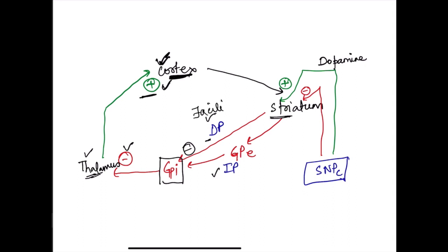In the indirect pathway there are three negatives, compared to two in the direct pathway. Two negatives make a positive, so the direct pathway facilitates movement. Three negatives in the indirect pathway means it inhibits movement. So: direct pathway facilitates movement, indirect pathway inhibits movement.